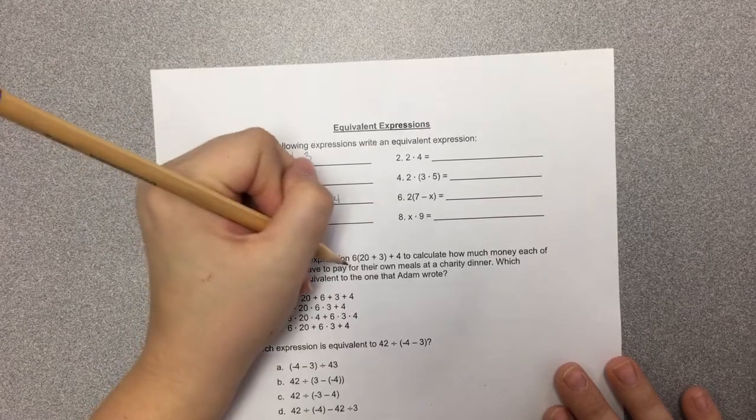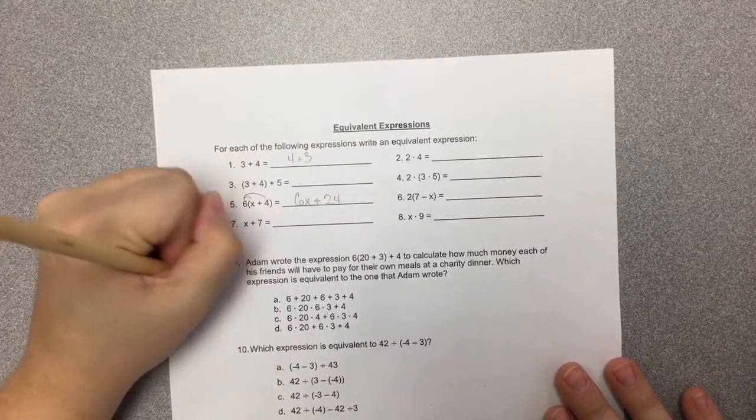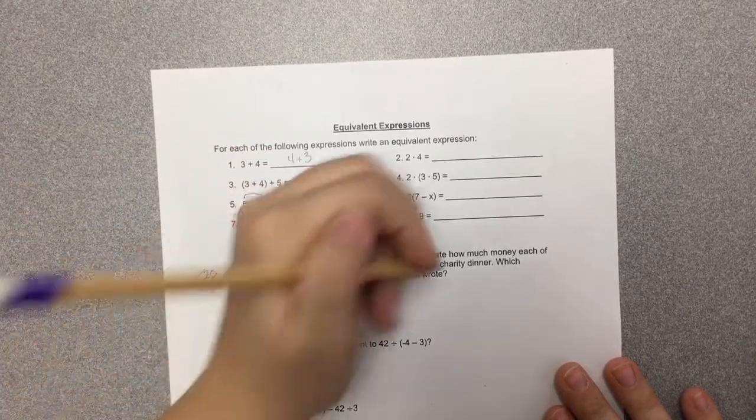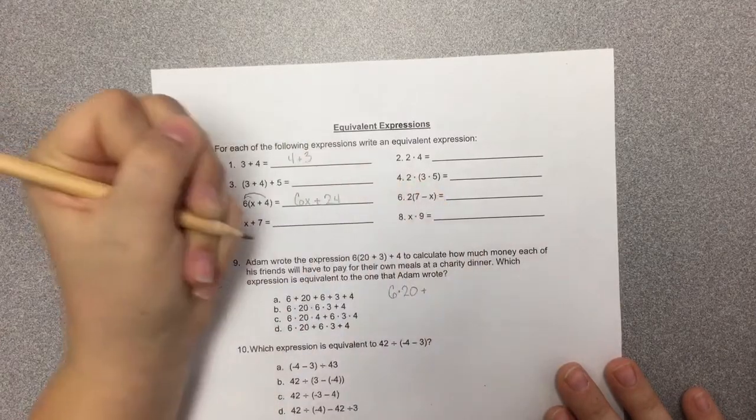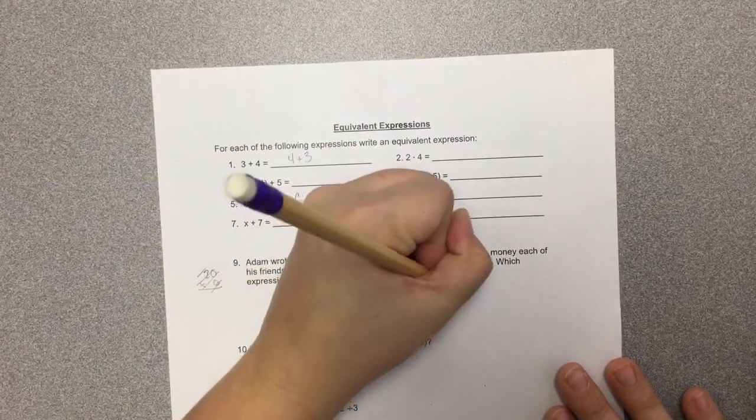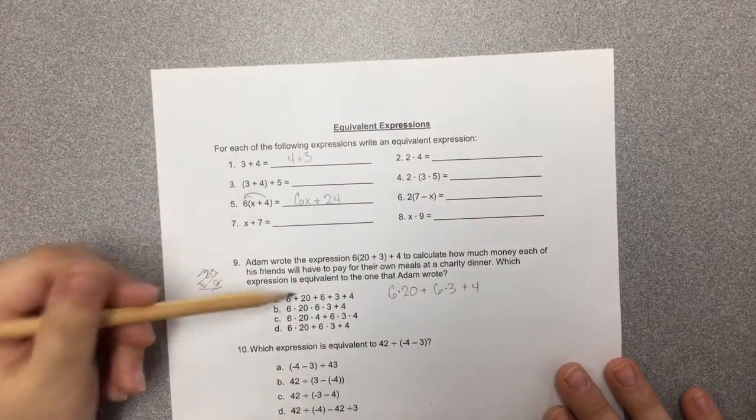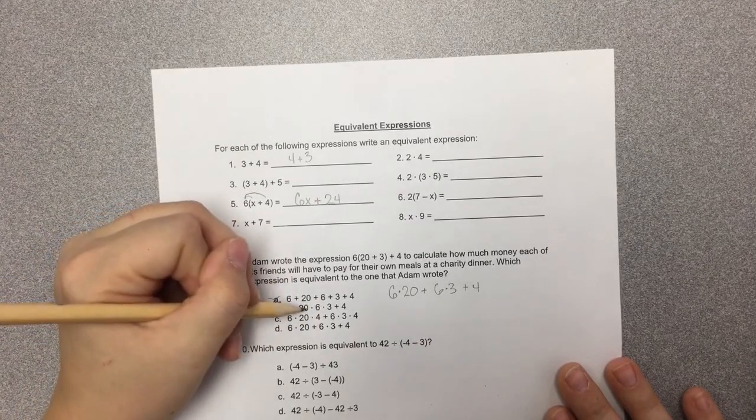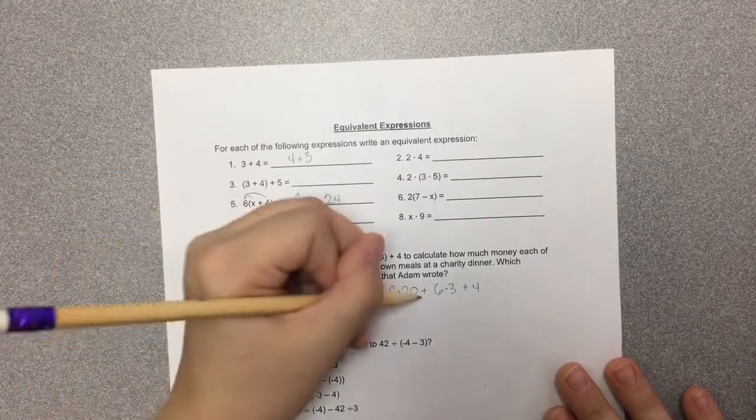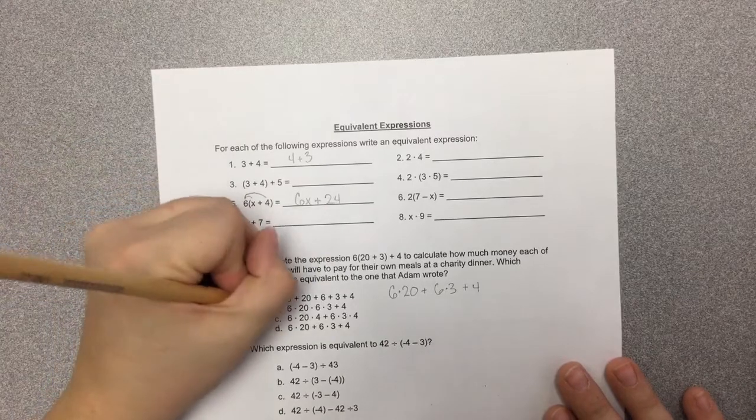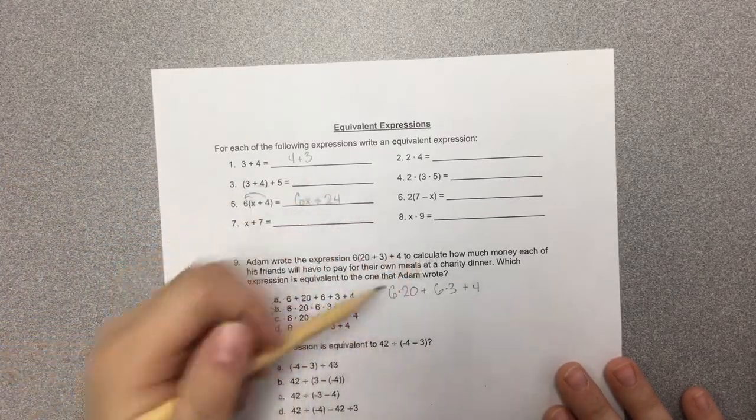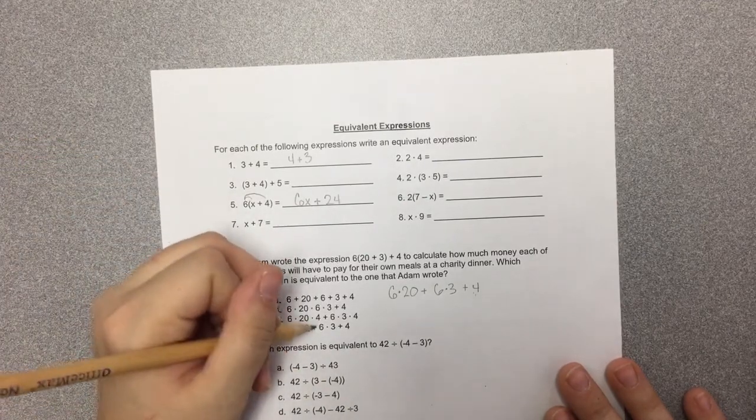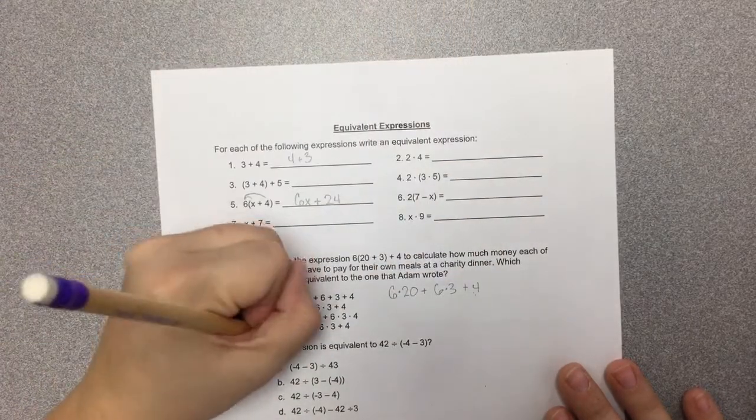So we could write this as 6 times 20, which is 20 times 6. It looks like they didn't actually solve that, so we don't need to do that. So we have 6 multiplied by 20 plus 6 times 3, and then we're adding 4 at the end. Obviously A is just saying you're going to add 6 and 20, so we know that's not correct. We know we're going to add 6 times 20 plus 6 times 3, so that can't be right. 6 times 20 times 4 - they moved that 4 into the middle and decided to multiply it rather than add it, so that's not going to work. And 6 times 20 plus 6 times 3 plus 4 looks exactly like what we wrote, so that's our answer.